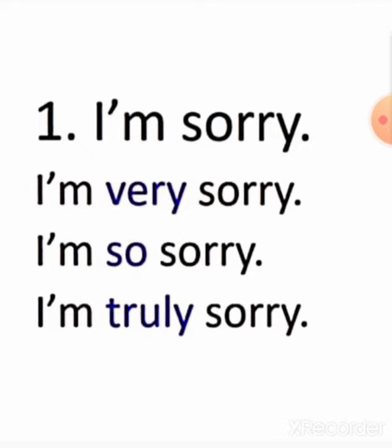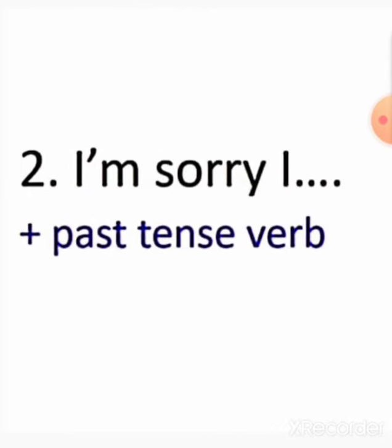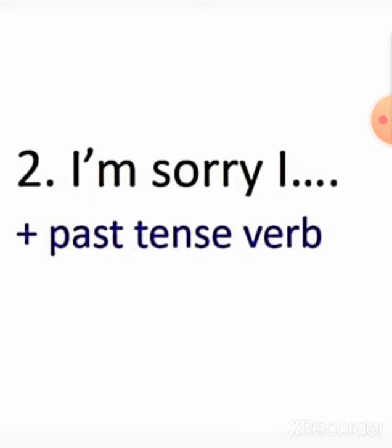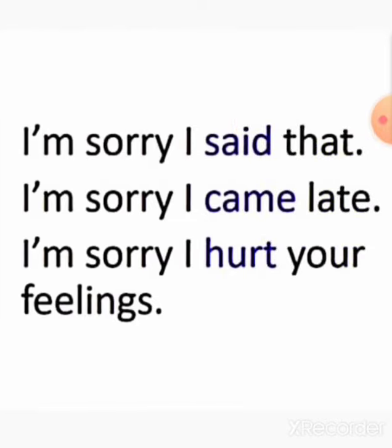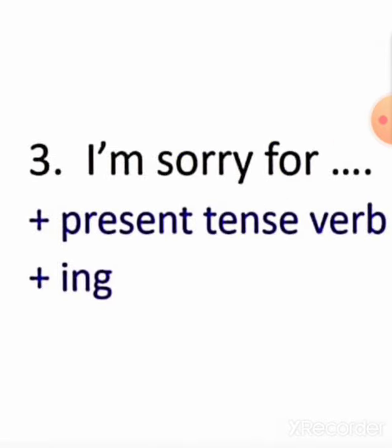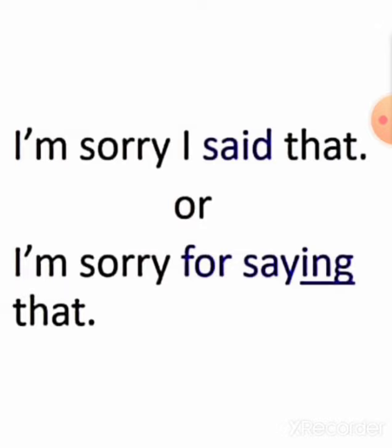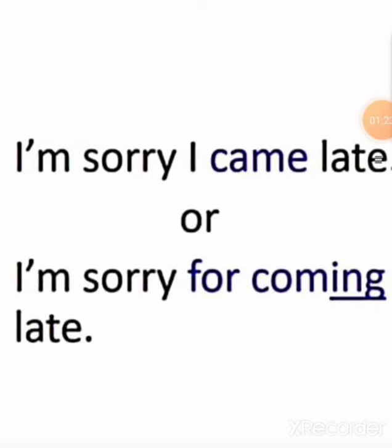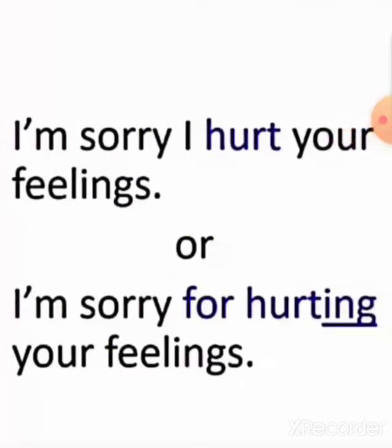Let's start with a simple one that I'm sure you already know: I'm sorry, or I'm very sorry, or I'm so sorry. I'm truly sorry. If you want to mention the reason with sorry, you add a past tense verb: I'm sorry I said that, I'm sorry I came late, I'm sorry I hurt your feelings. If you use 'for' while saying this sentence, you add the present participle: I'm sorry for saying that, I'm sorry for coming late, I'm sorry for hurting your feelings.